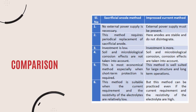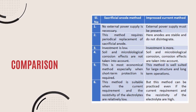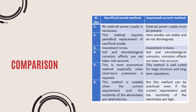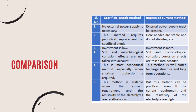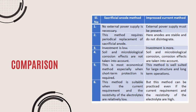Now let's look at the differences between the sacrificial anode method and the impressed current cathodic protection method. In the sacrificial anode method, no external power supply is necessary, but in the impressed current cathodic method, an external power supply is essential. The sacrificial anode method requires periodic replacement of the sacrificial anode — when zinc, magnesium, or aluminium sheets are completely corroded, they must be replaced with new sheets. In the impressed current method, however, the anodes are stable and do not disintegrate, so replacement is not needed as frequently. The investment is very low in the sacrificial anode method but higher in the impressed current method.